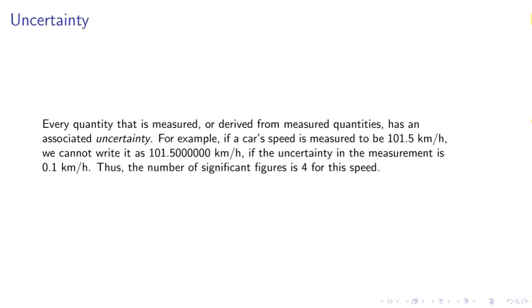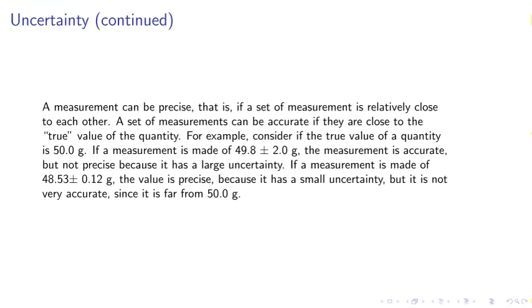Uncertainty. Every quantity that is measured or derived from measured quantities has an associated uncertainty. For example, if a car's speed is measured to be 101.5 km per hour, we cannot write it as 101.5000000 km per hour. The uncertainty in the measurement is 0.1 km per hour. Thus, the number of significant figures is 4 for this speed.